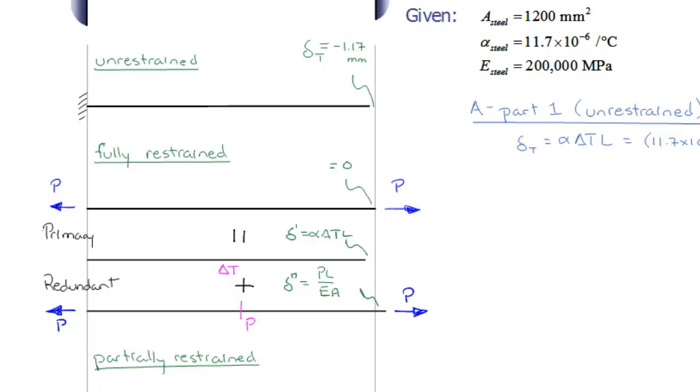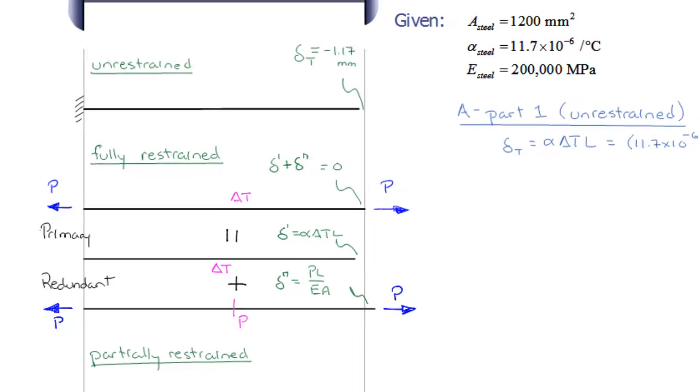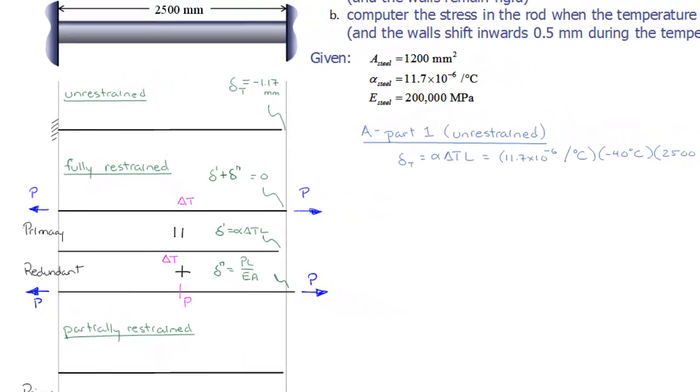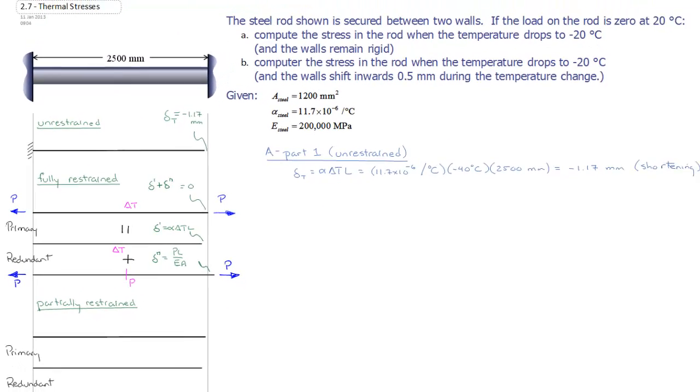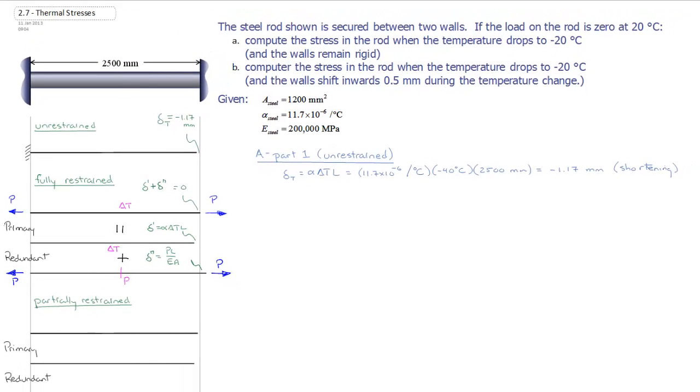So we can see that this section has delta T. And so from this, we get our compatibility equation, which is basically to say that delta prime plus delta double prime has to be equal to zero. And that compatibility equation is the equation that we need in order to solve our statically indeterminate problem.